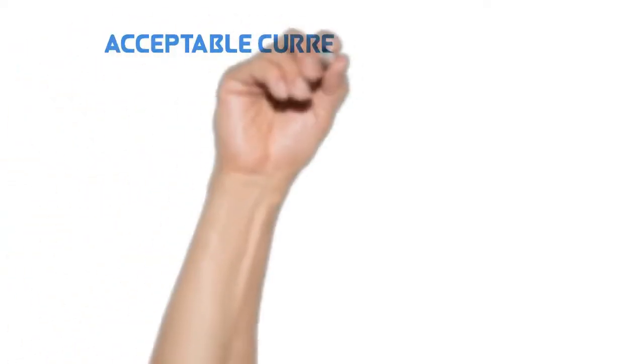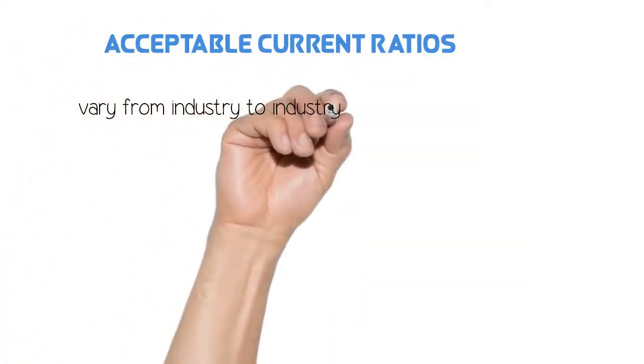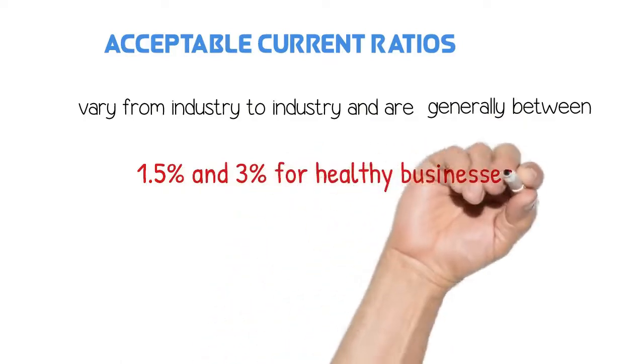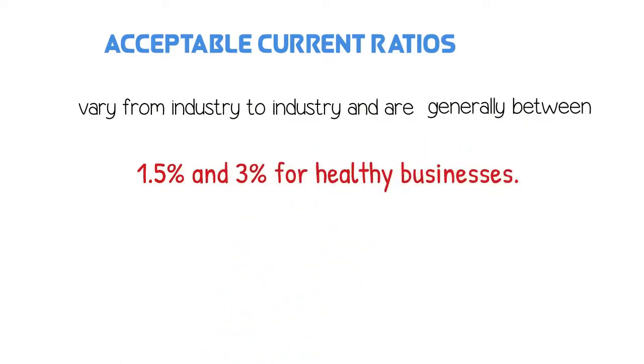There is no hard and fast rule for an acceptable current ratio. It varies from industry to industry and is generally between 1.5 and 3 for healthy businesses.